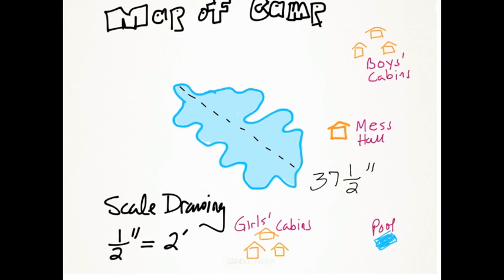And we know that the map or the scale drawing shows the lake to be thirty seven and a half inches. But the lake itself isn't thirty seven and a half inches. The picture is. So we look at our scale drawing. One half inch equals two feet.